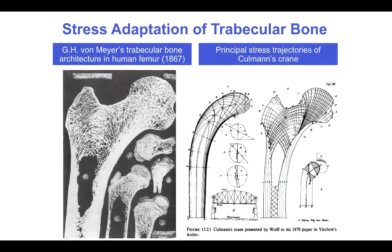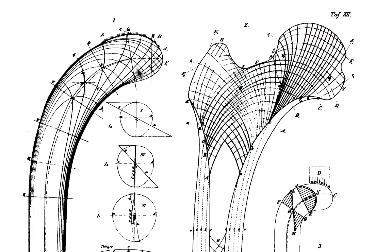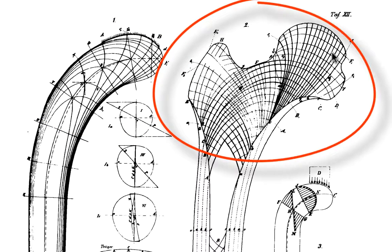That pattern looks somewhat similar to the pattern of principal stress axes that Cullmann had drawn in an engineering paper analyzing the mechanics of this crane structure.